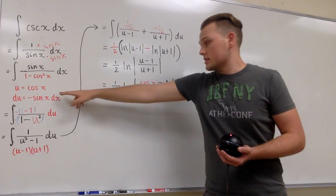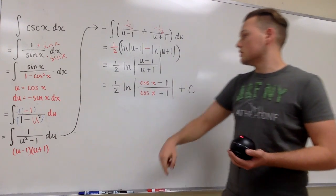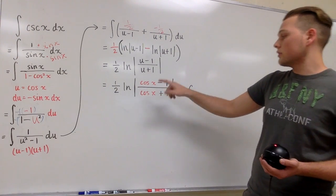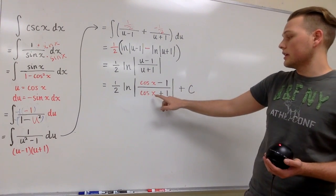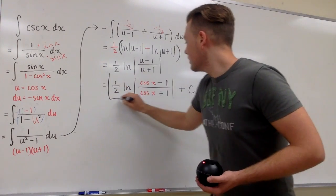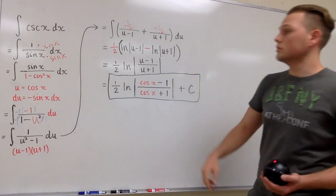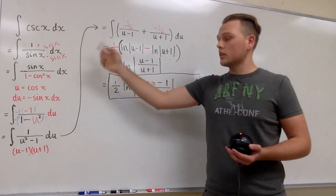And now just by subbing in from our initial u substitution we're going to have 1 half times the natural log of the absolute value of cosine x minus 1 over cosine x plus 1, and that is our final answer to a different approach to the integral of cosecant x.